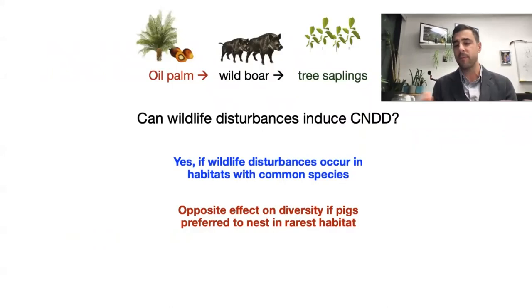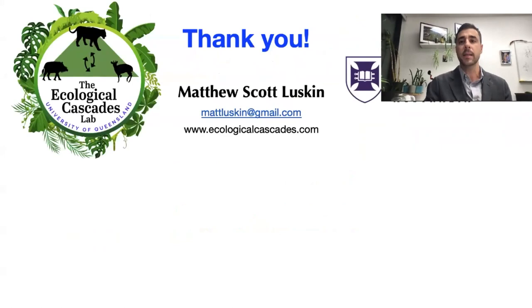To summarize: at our site, we had a high propensity of wild boar eating oil palm, making nests, and killing tree saplings. This induced conspecific negative density dependence because the pigs liked to nest in the dominant habitat type. For more information, please refer to our paper in Proceedings of the Royal Society of Biology. Thank you.